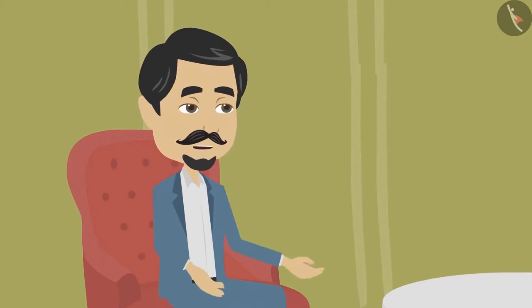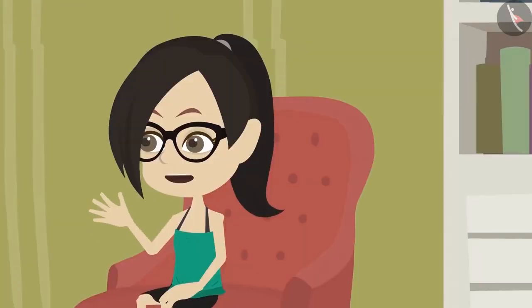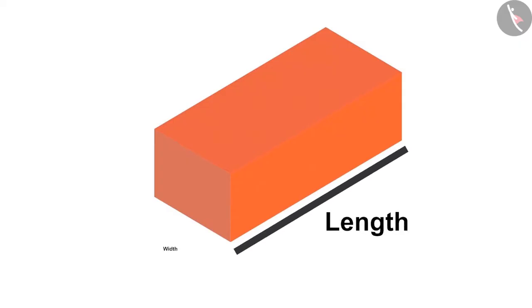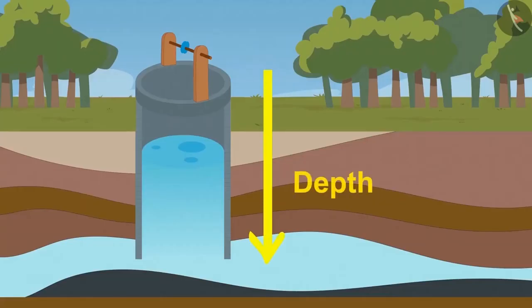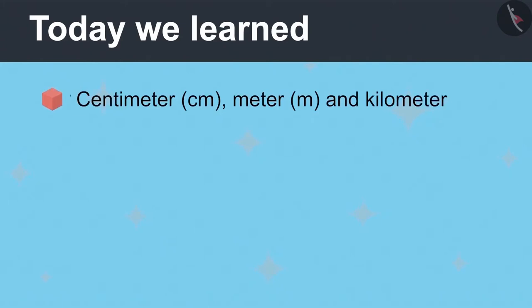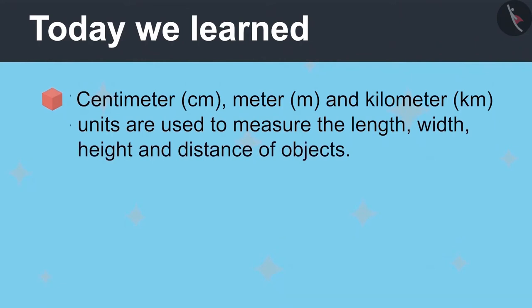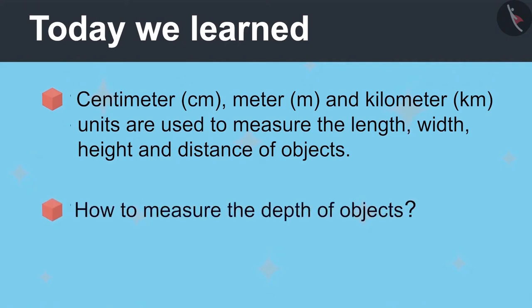Now tell me whether you understood what centimetre, metre and kilometre can be used to measure. Yes, Papa. The length, width, height, depth and distance of objects are measured in centimetres, metres and kilometres. Today we learned centimetre, metre and kilometre units are used to measure the length, width, height, distance and depth of objects.